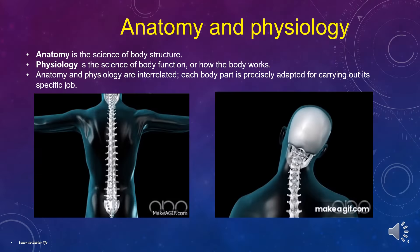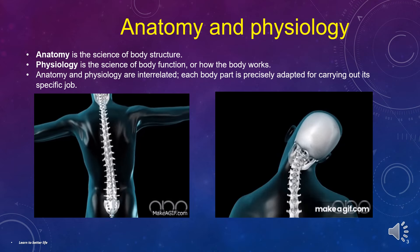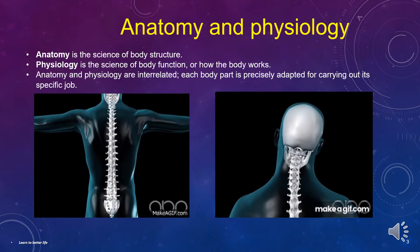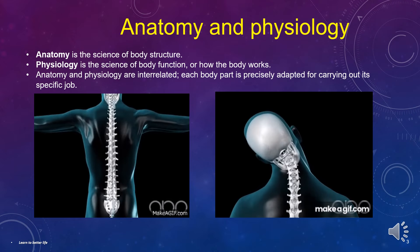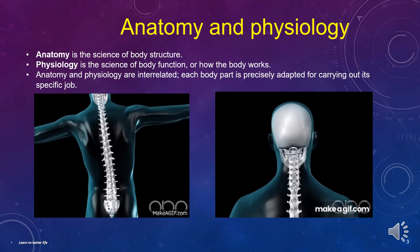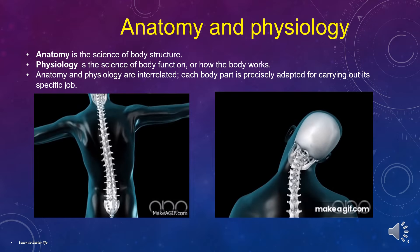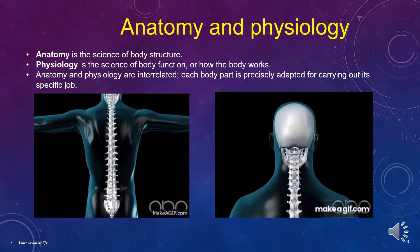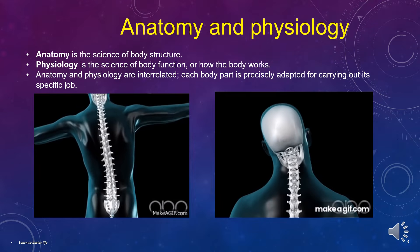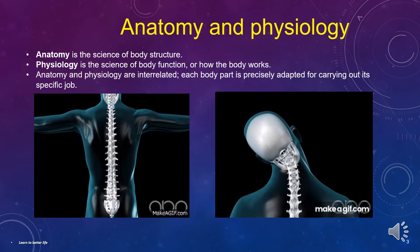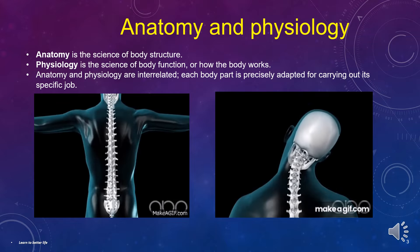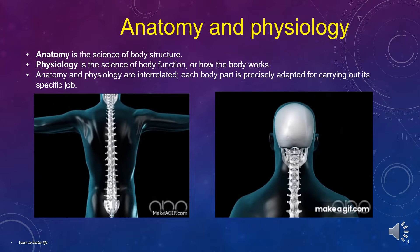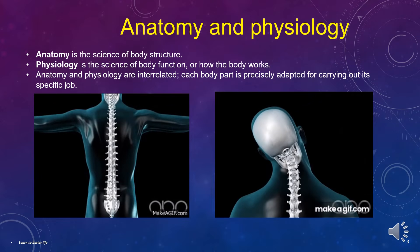Anatomy is the science of body structure. Physiology is the science of body function, or how the body works. Anatomy and physiology are interrelated — each body part is precisely adapted for carrying out its specific job.